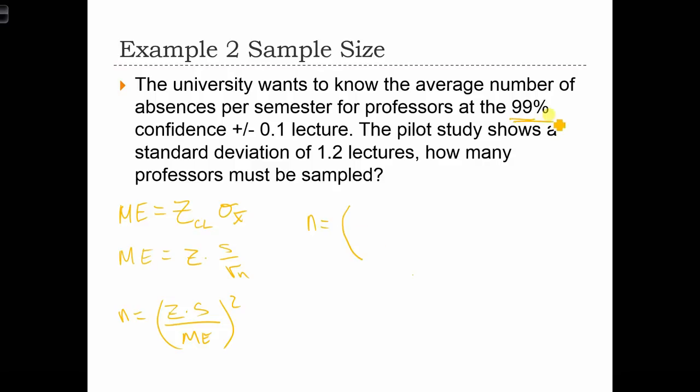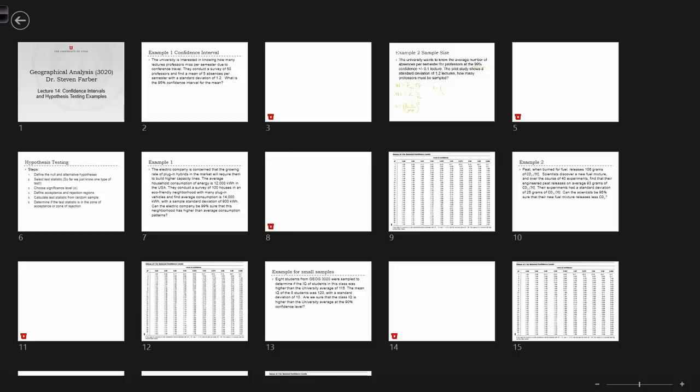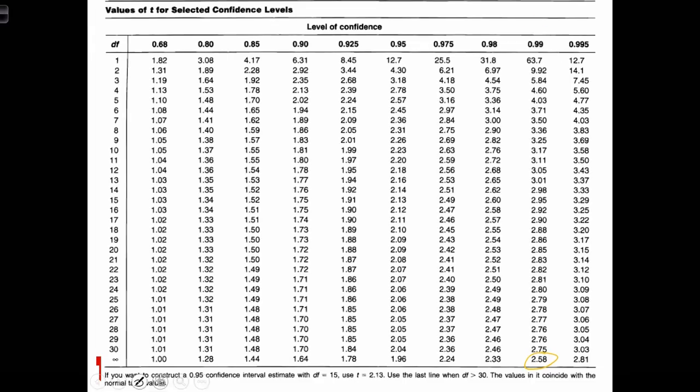We want the z-score for a 99% confidence level. Based on our table, we go down the 99% column to the bottom row, and we see it's 2.58.